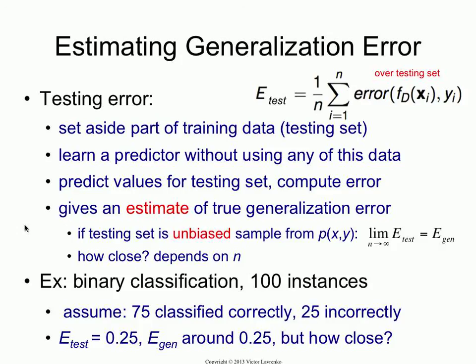Now, it is an estimate. If we do this sampling in an unbiased way — so if our testing set is really representative of the entire joint distribution — then we have some friendly laws from statistics that tell us that as the size of the set gets bigger and bigger, the error you observe on the testing set is going to approach, in the limit, the true generalization error. That happens when n goes to infinity. So you know it's unbiased, and if you have lots of data it will eventually approach the right number, but you don't really know how close it is — and that depends on the size of the testing set.